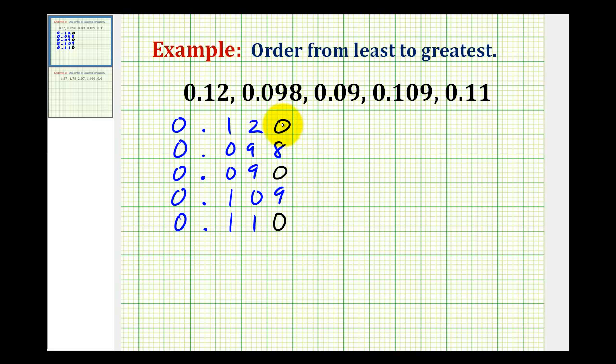And now it's going to be much easier to order these from least to greatest. The smallest decimal here is this one, which is 90 thousandths. Next, we would have 98 thousandths, then 109 thousandths, 110 thousandths, and lastly, 120 thousandths.